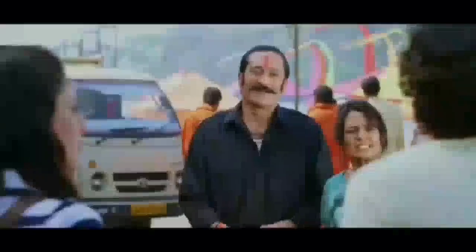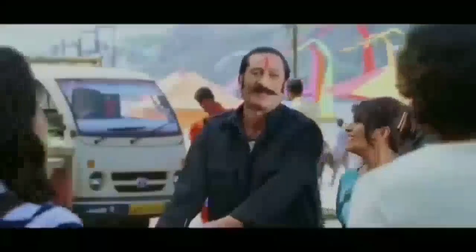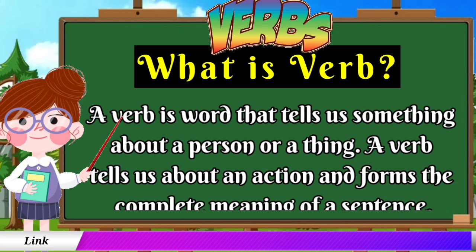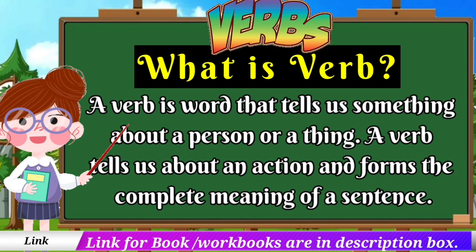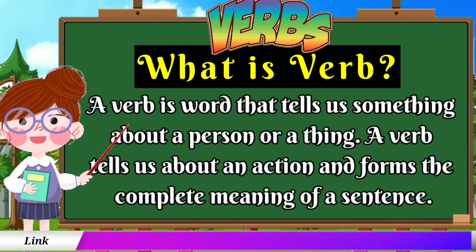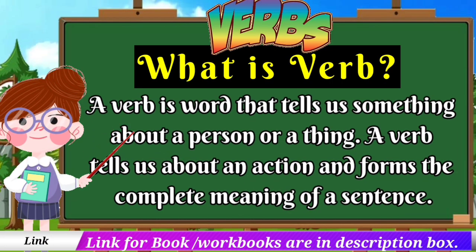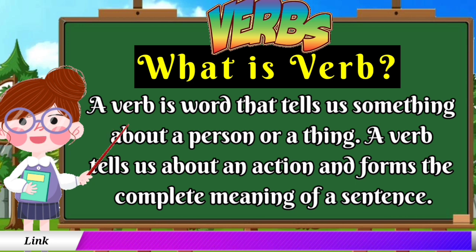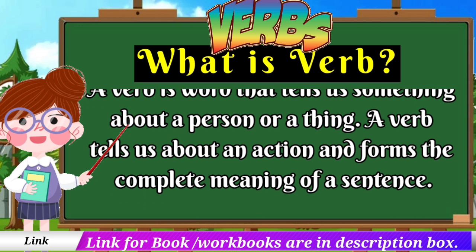What is a verb? A verb tells us something about a person or a thing. A verb tells us about an action and forms the complete meaning of a sentence.